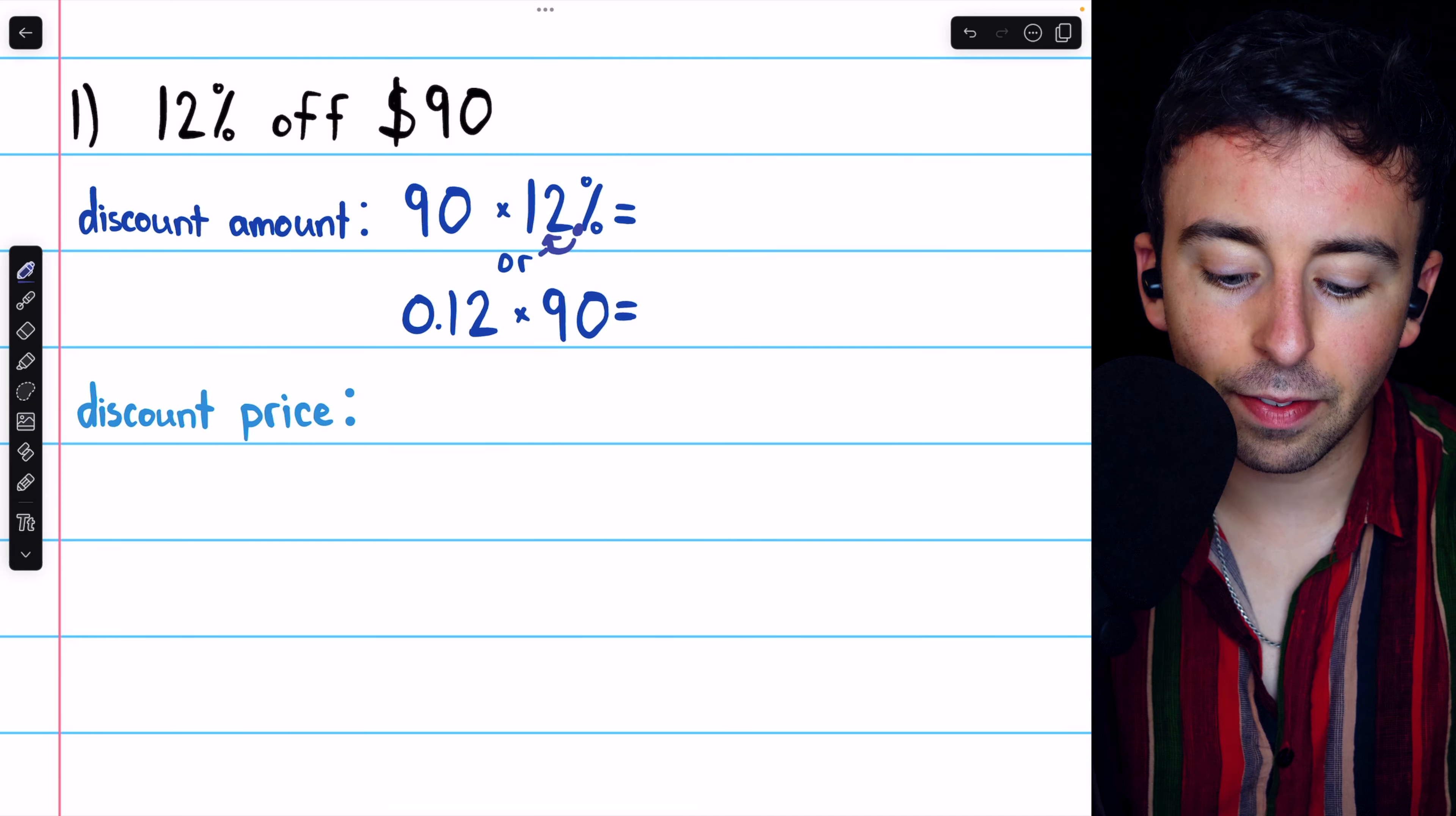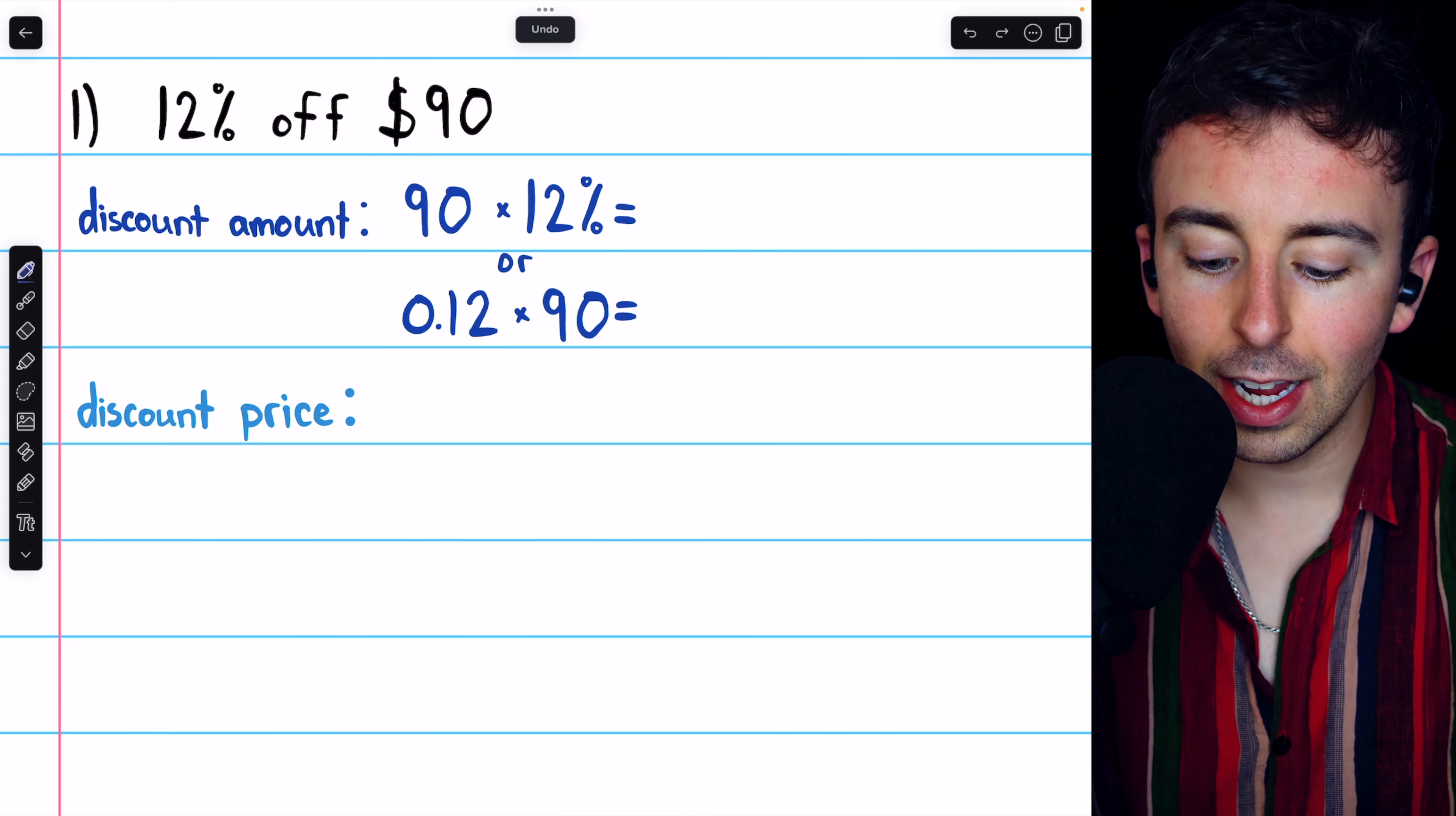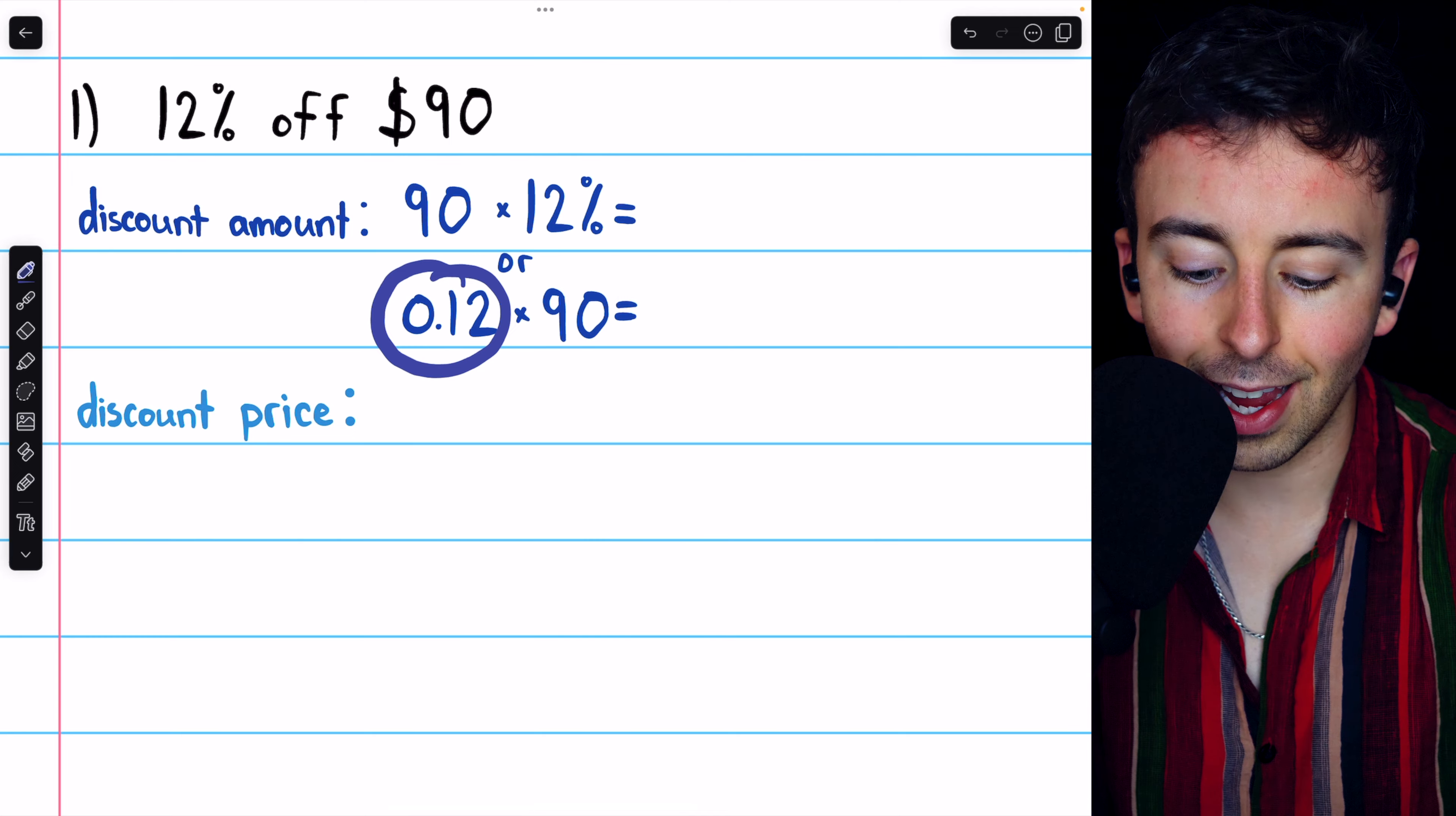We take the invisible decimal point in that percent, and we move it to the left two places. It's like dividing by 100, and that tells us what the percent is as a decimal.